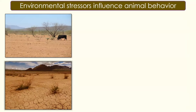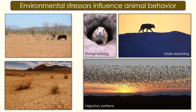Environmental stressors such as overgrazing, climate change, and drought can have significant impacts on the way animals behave and respond. For example, animals might change their activity patterns in terms of shelter-seeking; mate searching might become more difficult, and energetically expensive behaviors such as migration might become more difficult, necessitating longer refuel times or delays to those migration patterns.